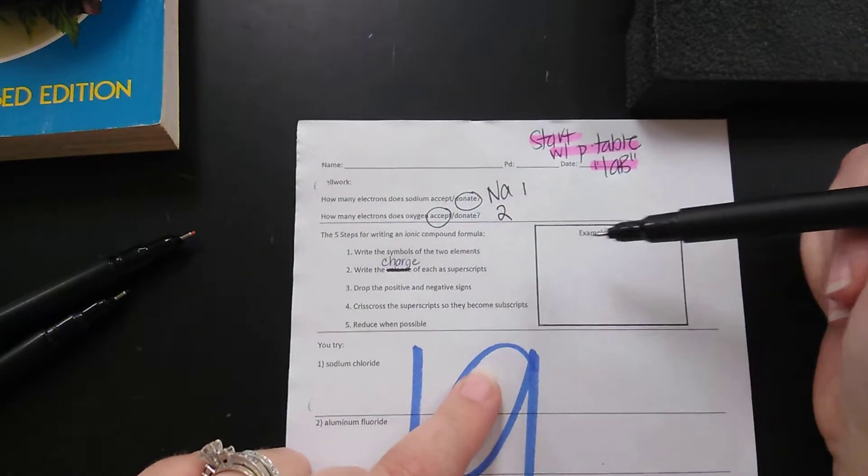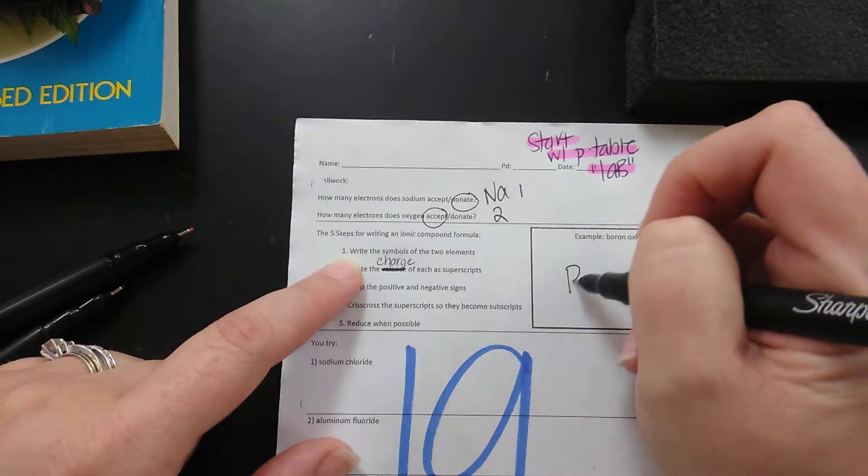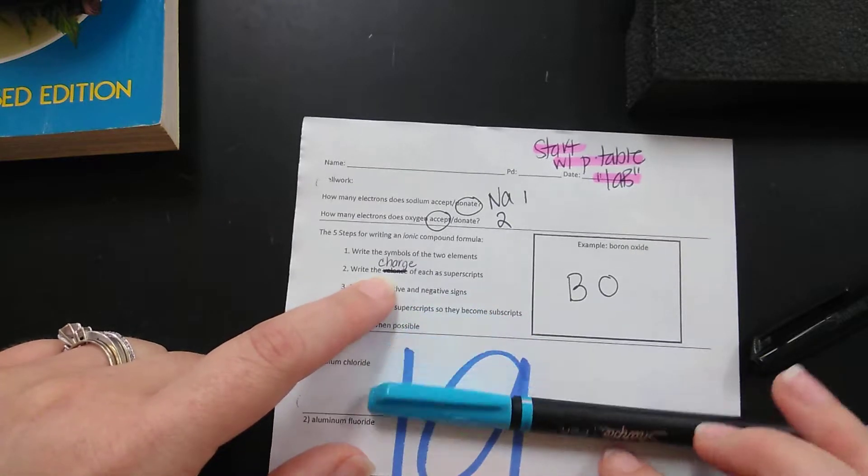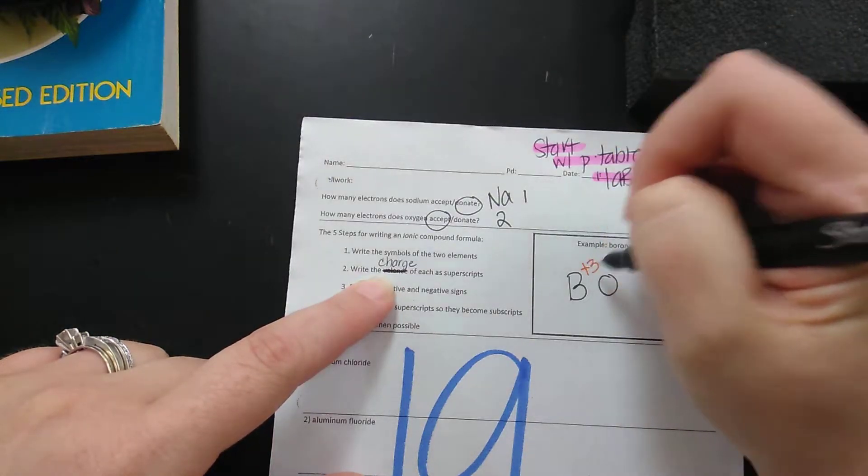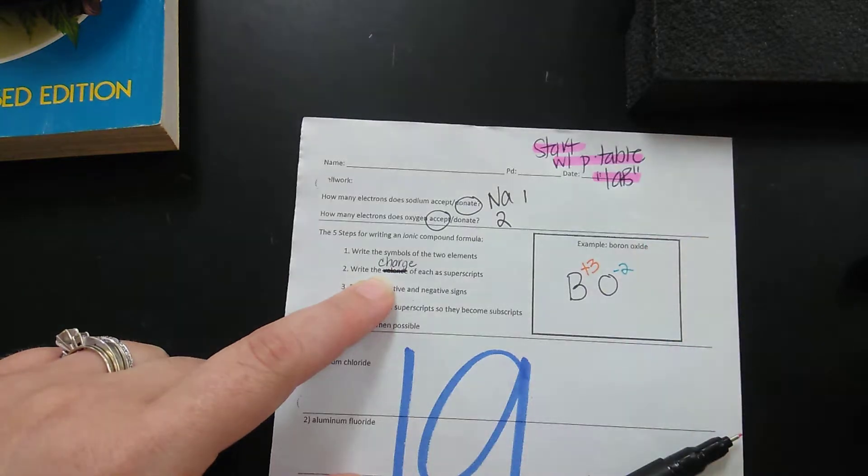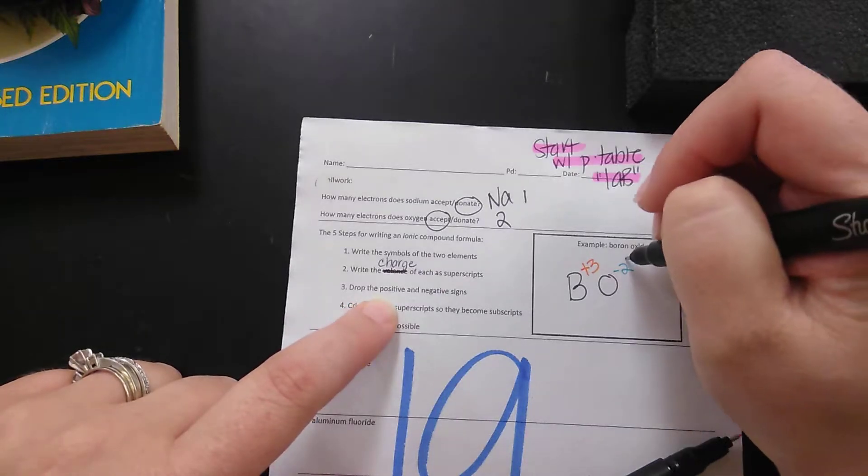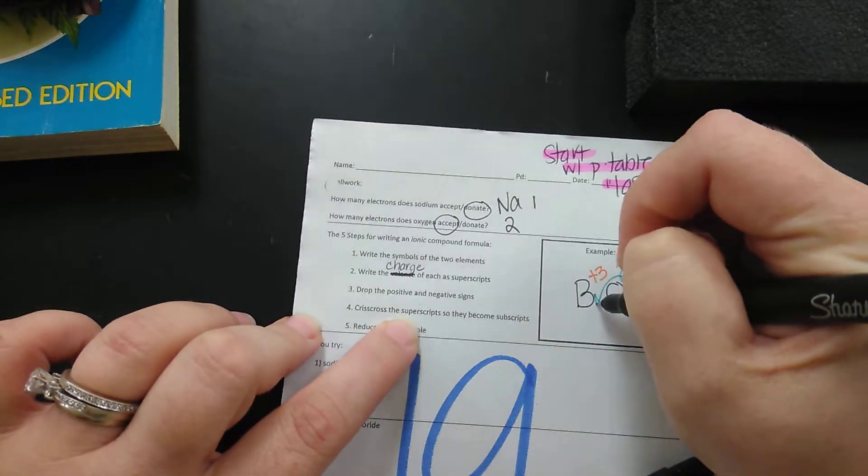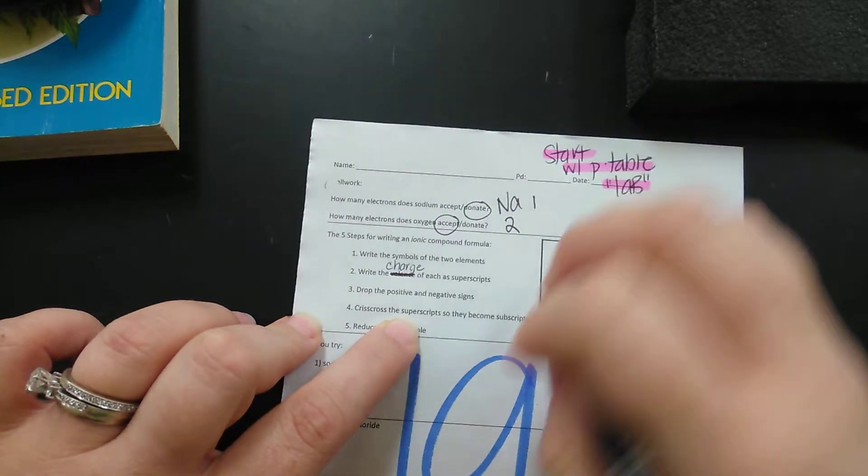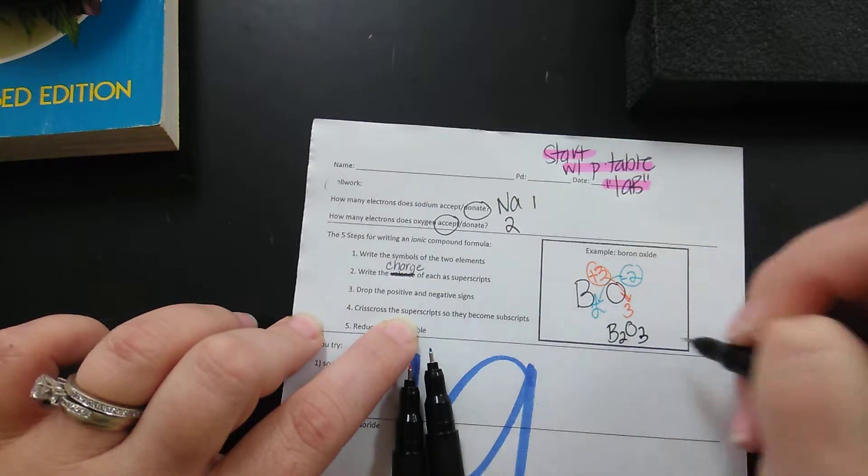So we're making compounds today so I'm going to show you how we're going to do that. So what we're going to do first is you're going to write the symbol of the two elements. So boron is B, oxygen is O. I'm going to use two different colors. You're going to write the charge as superscripts. So boron is in group three so it has a positive three charge. Oxygen is in group six so it has a negative two charge. We no longer care about if it's positive or negative. We're going to take the number and we're going to crisscross them. We're going to crisscross the superscripts so they become subscripts. So this two is going to go there and this three is going to go here. So when boron and oxygen react chemically it's going to do so in a two to three ratio.